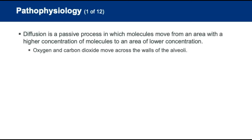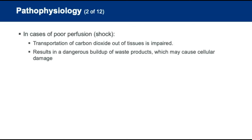Once it reaches the lungs, the bicarbonate breaks back down into carbon dioxide and water, and the carbon dioxide is exhaled. In cases of poor perfusion — remember, this is called shock — the transportation of carbon dioxide out of the tissues becomes impaired, resulting in a dangerous buildup of waste products that can cause cellular damage.